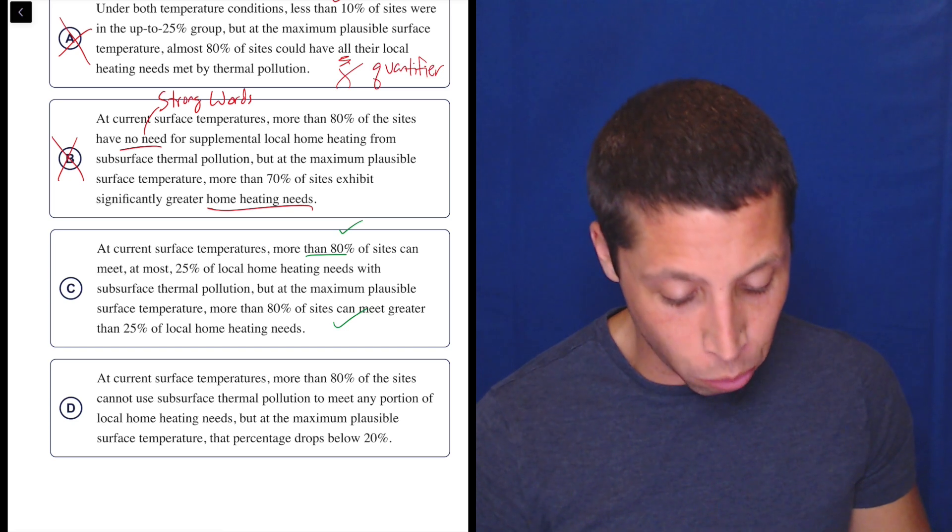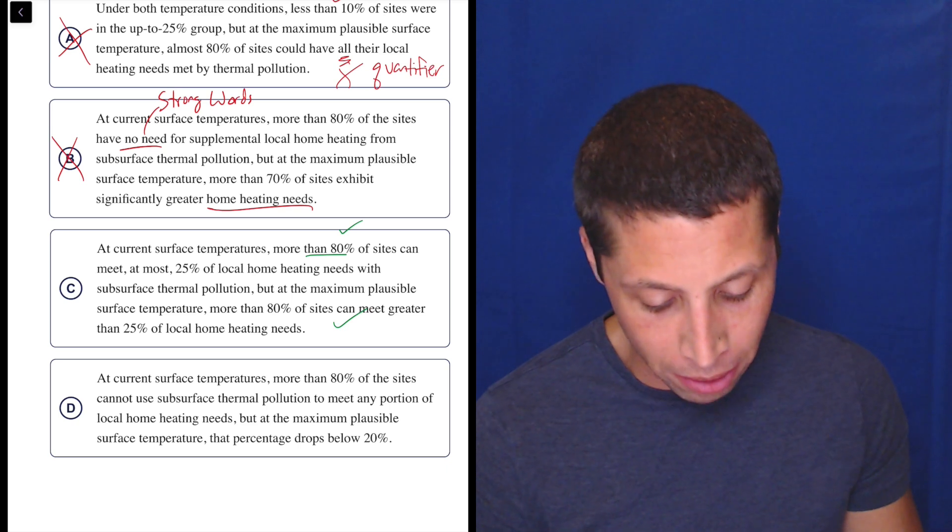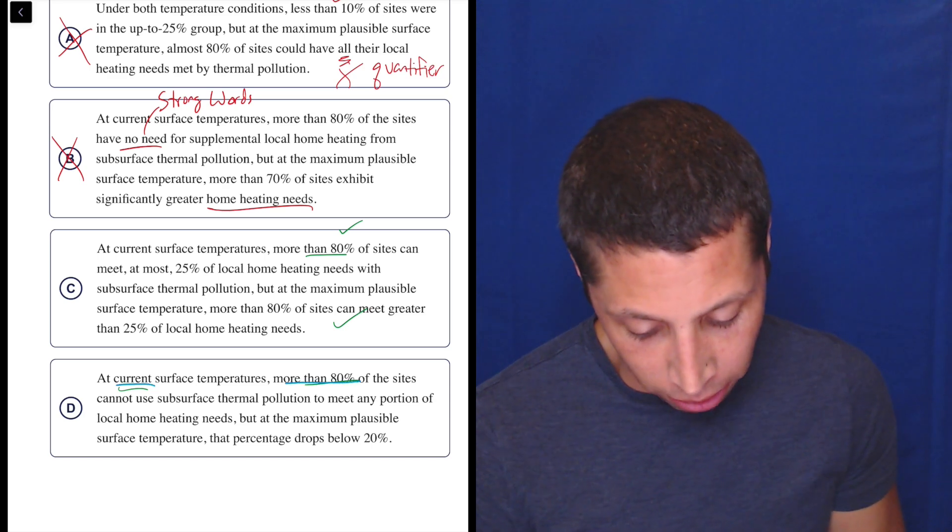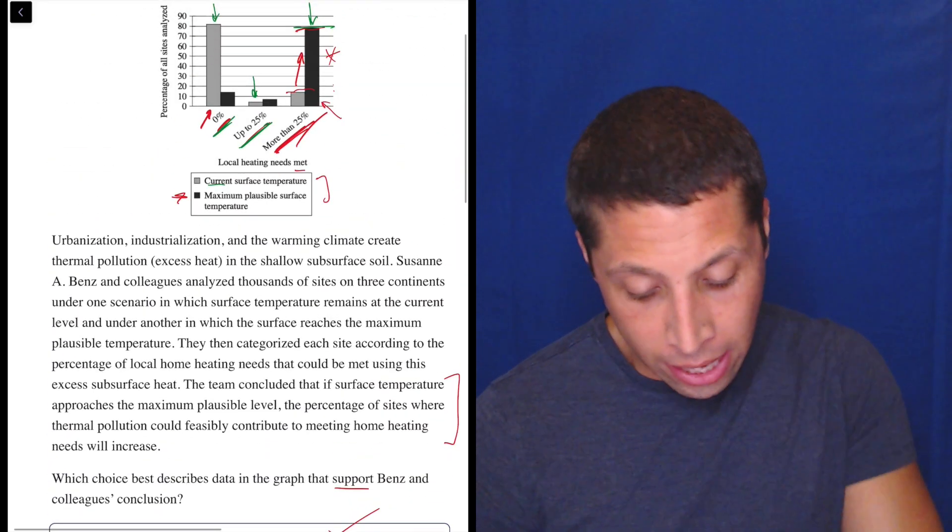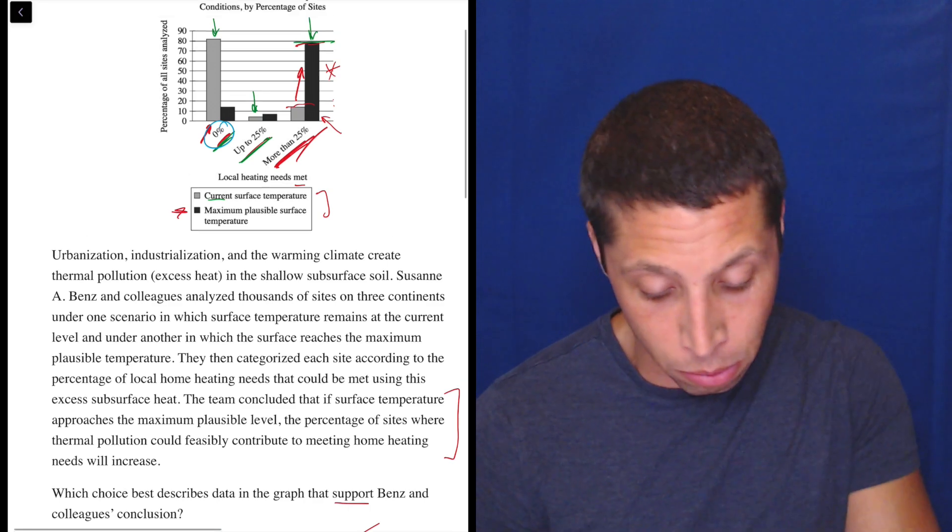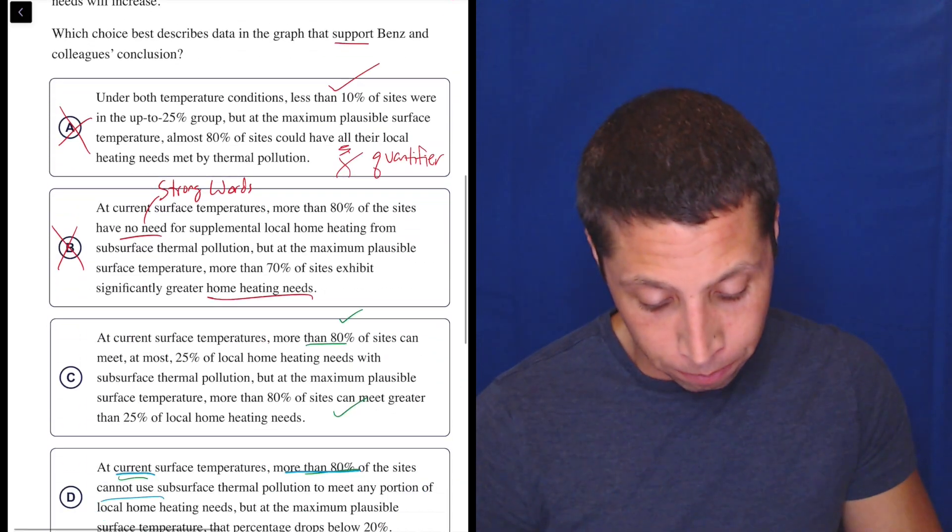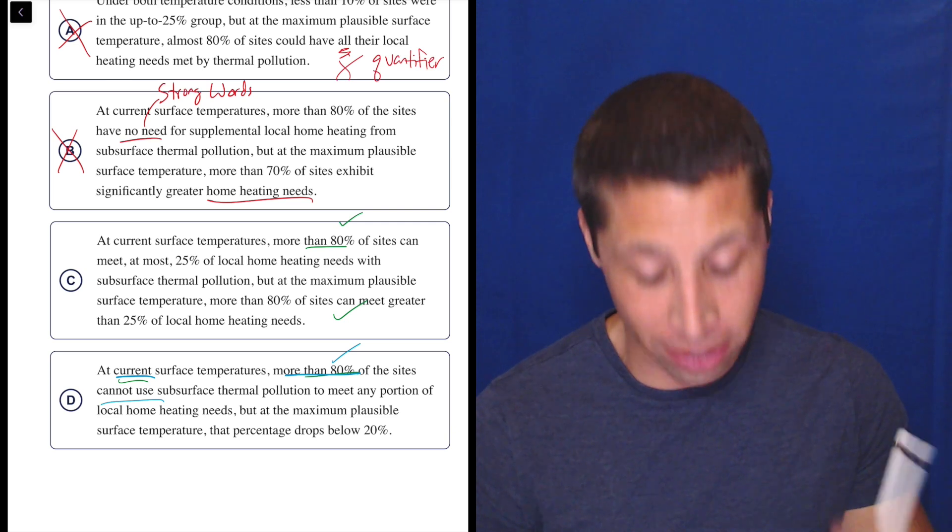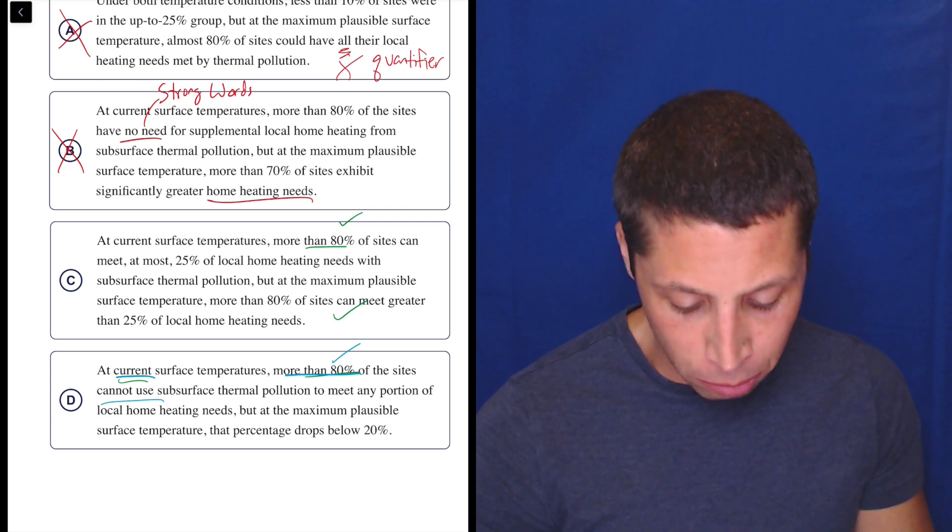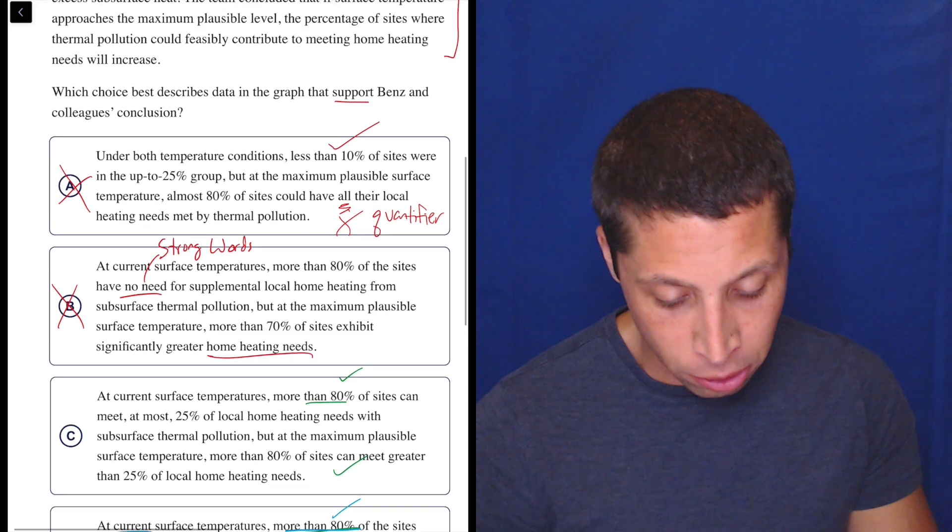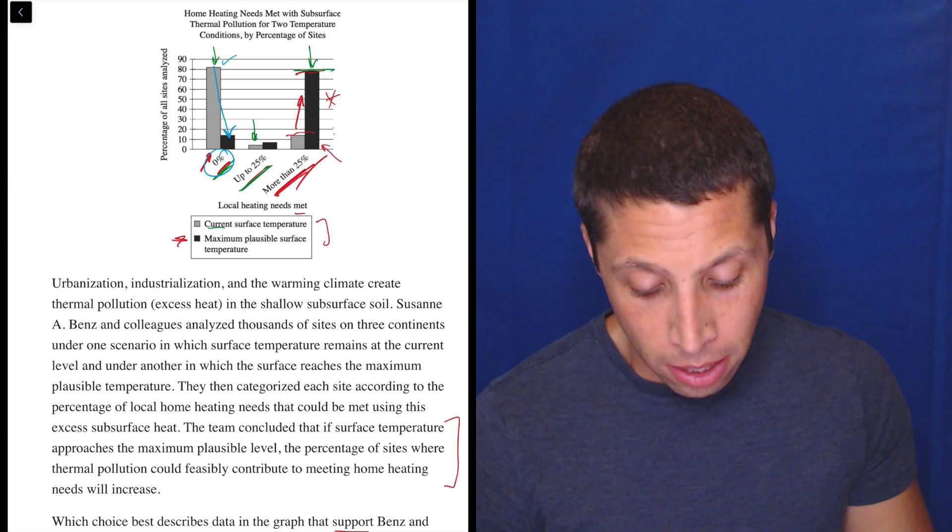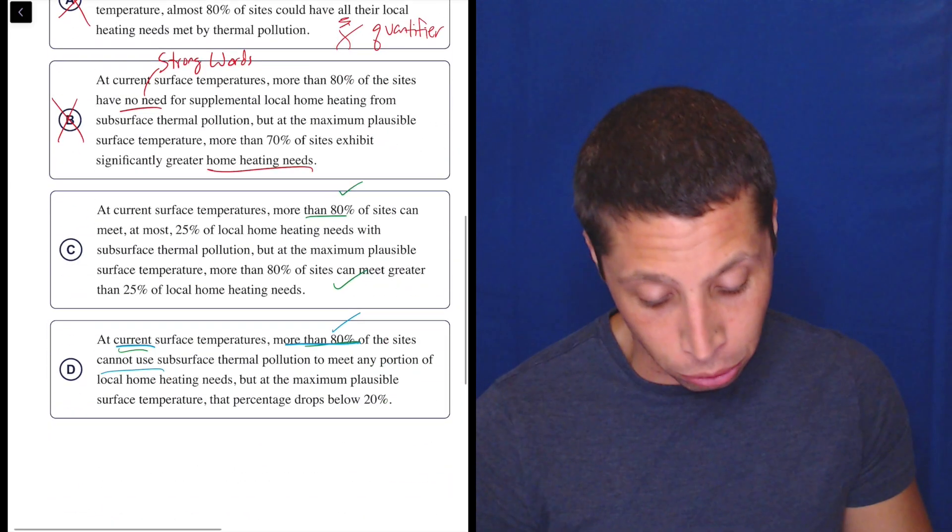Let's look at D: at current surface temperatures, more than 80% of the sites cannot use subsurface thermal pollution to meet any portion of local home heating needs. And that sounds strong, right? But more than 80% at the current, more than 80% at the current cannot use it. Well, if they can use only 0%, that's that they can't use it, right? So that seems true. This is more than 80%. So that seems true too. Notice that they didn't use 0% though, right? They phrased it differently. Why? To make it harder to notice that that's what they're talking about. But at the maximum plausible surface temperature, that percentage drops below 20%. So again, we're looking at the gray bars and notice this is now dropping to less than 20%. Yeah. There you go. That's also true. It's looking at it in a different way.